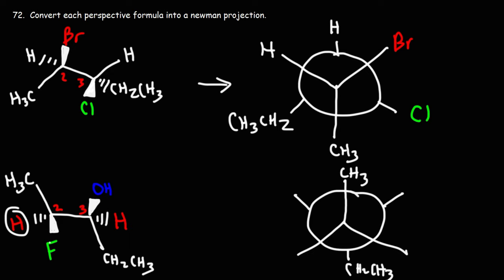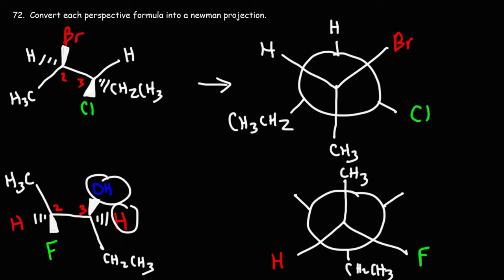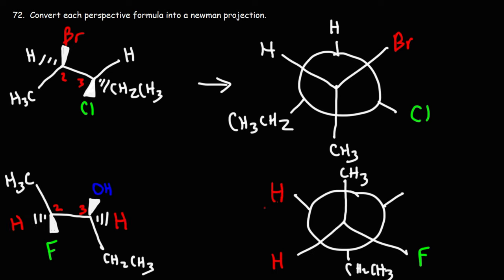Now on carbon 2, we have a hydrogen and a fluorine. The hydrogen is on a dash, so we're going to put that on the left side. The fluorine is on the wedge — it's coming out of the page — so we're going to put that on the right side. Moving on to carbon 3, we have an OH and an H. The hydrogen is on a dash, going into the page in the same direction as the other hydrogen, so these two will be on the same side. The hydroxyl group is coming out of the page, which is on the same side as fluorine, so they're both going to the right.